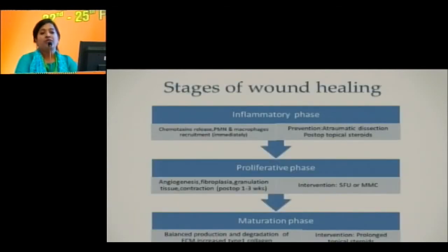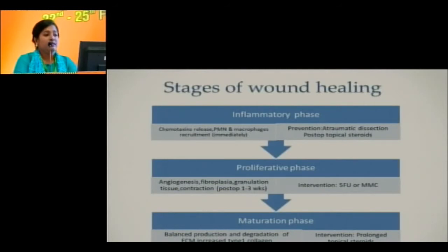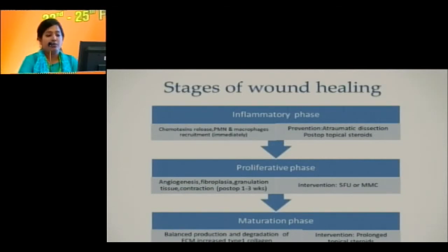Briefly about stages of wound healing: the inflammatory phase starts immediately when surgery begins — there is chemotaxin release, polymorphoneutrophil and macrophage recruitment. The way to prevent it is atraumatic dissection and post-op topical steroids. In the proliferative phase, there is angiogenesis, fibroplasia, granulation tissue formation, and contraction, which usually occurs in the first to three weeks post-op.